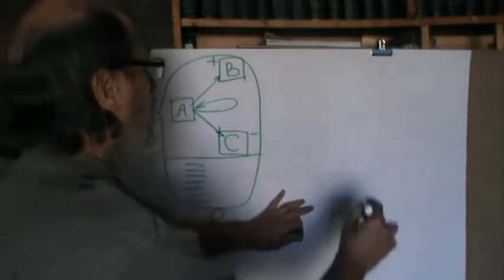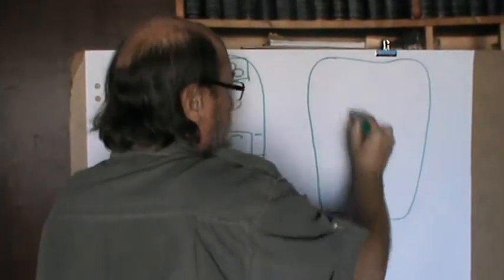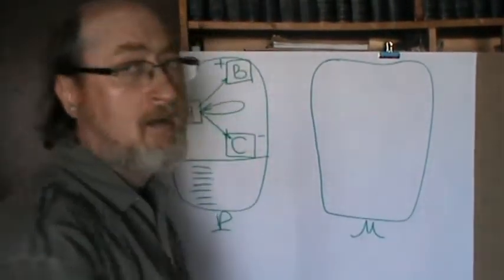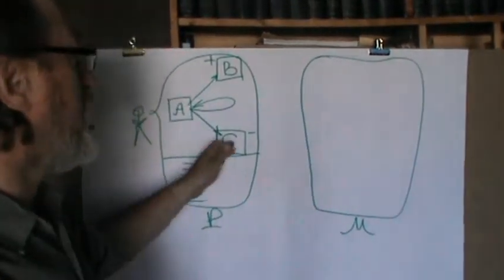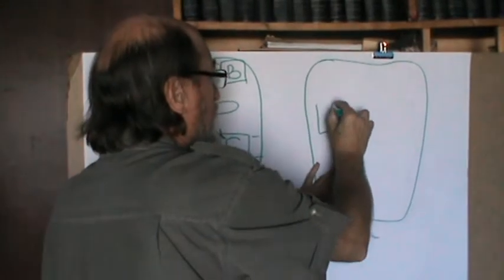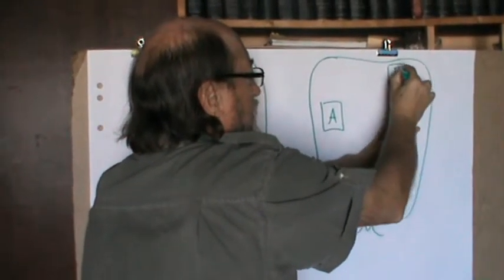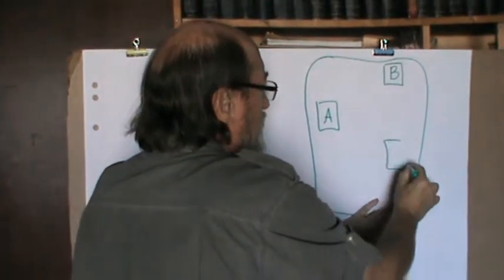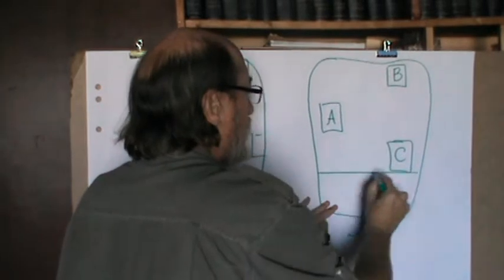So a better idea is to build a model. The model has some mapping of this reality with state A, with state B, and with state C, and with some list of moves allowed.